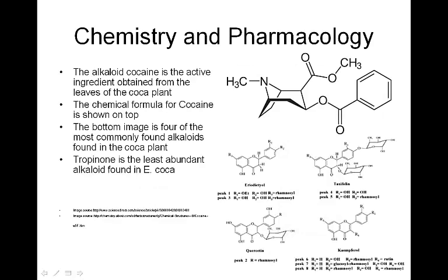Here you can see the chemistry and pharmacology of coca, with cocaine being the main alkaloid obtained from the coca leaves. The chemical formula for cocaine is shown on the top right. The bottom four structures are some of the other common alkaloids found in the coca plant. Tropacocaine is the least abundant alkaloid found in Erythroxylum coca.